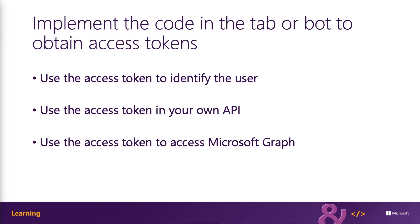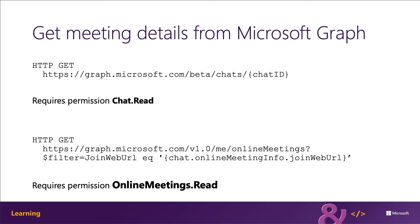When the token is used in this way, it's referred to as the bootstrap token because it's only used to obtain an access token that can be used to call Microsoft Graph. One way to get the current meeting details in a tab is using Microsoft Graph. The Microsoft Teams context object contains a meeting ID property of the current meeting. This ID contains the ID of the chat for the meeting, surrounded by a zero and a hash symbol on both ends. Developers can remove that prefix and suffix and use that chat ID to query Microsoft Graph for more details about the meeting.